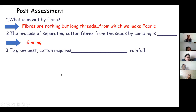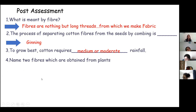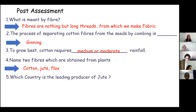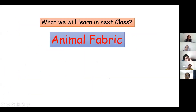Maya, to grow the best cotton, what type of rainfall and soil does it require? Moderate rainfall and black soil — very good! Ozina, name two fibers obtained from plants. Jute and cotton — very good! Shrishti, which country is the leading producer of jute? India. And which fabric will you choose to wear in hot and humid conditions, Rama? Cotton — excellent!